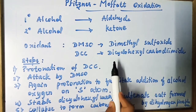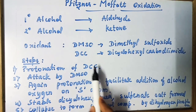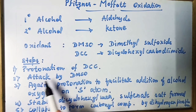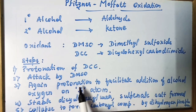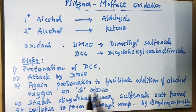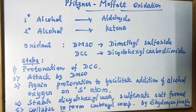There are simple steps for Moffat Oxidation: first, the protonation of DCC; then the attack by DMSO; then again protonation in order to facilitate the addition of alcohol oxygen on the sulfur atom. Then the stable dicyclohexylurea and sulfonate salts are formed, and lastly collapsing to form the carbonyl compound by the dihydrogen phosphate.